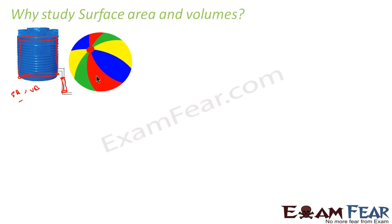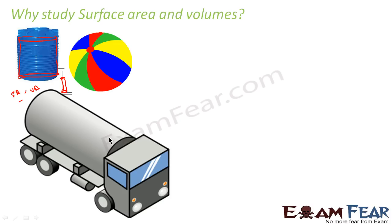Similarly, for a ball — if you want to paint it, you need the surface area, and if you want to find the volume of air inside, you need the volume. There are many such figures. A large oil tank — if you want to know the total volume of oil it can hold, you need the volume, since it is almost cylindrical in shape. Similarly, for a tire, you can find the volume of air inside.